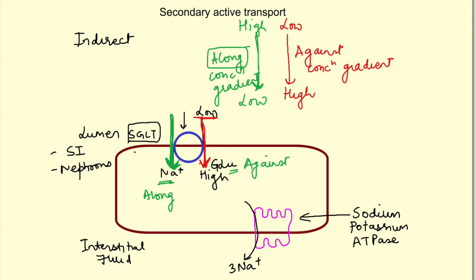You may ask where ATP is being utilized. It is being utilized to generate or maintain the gradient for sodium ions. If this transport continues, with each transport the gradient for sodium ions decreases, since more sodium ions are moving inside, and after some time it will be completely lost.